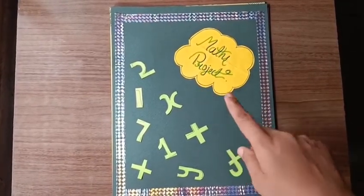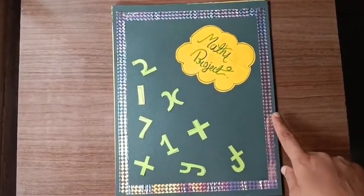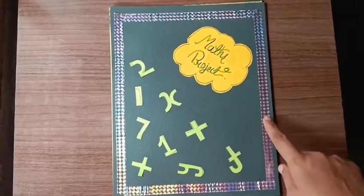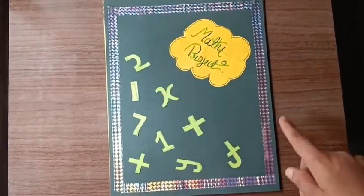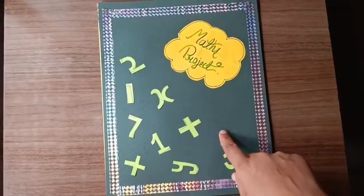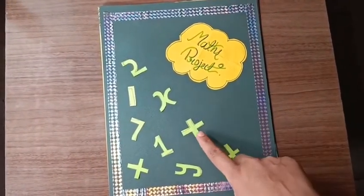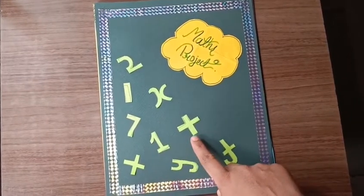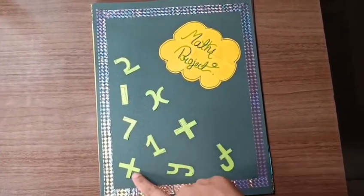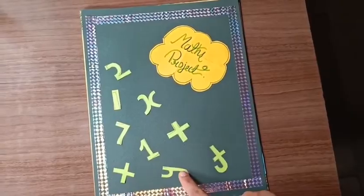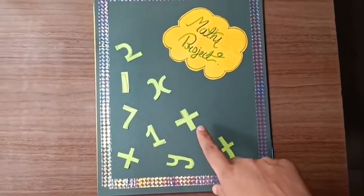maths project. Then I took a decorative tape and stuck it all over on four sides. Then I cut shapes, numbers and signs like 1, 2, 3, plus, minus, multiplication, and variables x, y. Like this, I stuck them on the project.